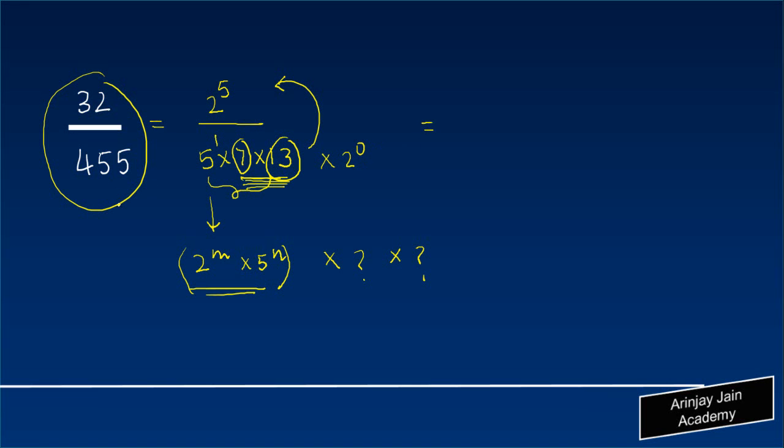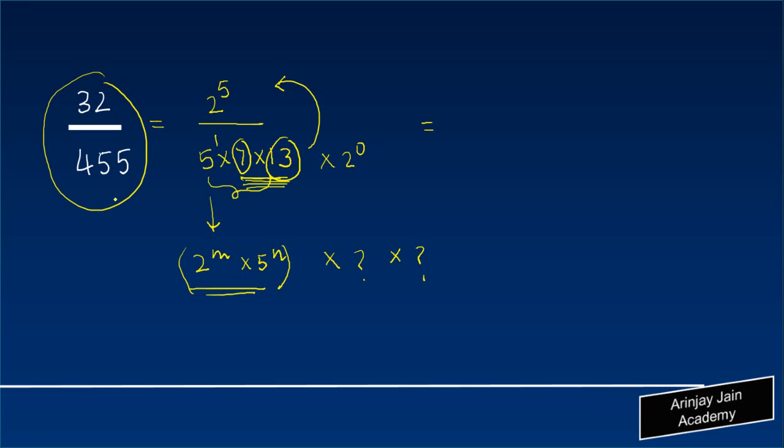And that I could show you through the use of this calculator. So 32 divided by 455 is equal to... Now if you see the answer that we are getting is a non-terminating decimal expansion and what is repeating itself is 7 0 3 2 9 6, 7 0 3 2 9 6, 7 0 3 2 9 6. So it has closed here because that's the number of digits that you have in this calculator, but effectively this is a non-terminating decimal expansion.